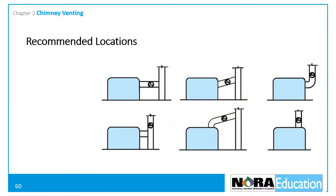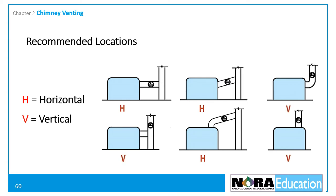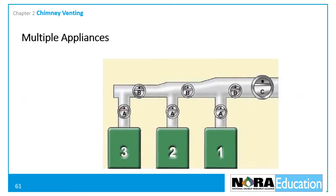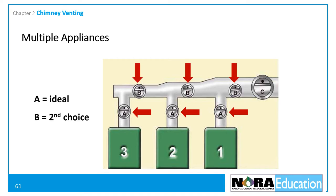This diagram helps an installer or technician determine if a location is considered horizontal or vertical, with H's indicating horizontal positioning and V's indicating vertical. When several appliances are vented into a common chimney connector, each should have its own draft control in position A — the uptake between the appliance and the main breach. If the uptake is too short, locate the control in position B, the main breach. If neither location is possible, install a single large control in location C between the chimney and the nearest appliance.